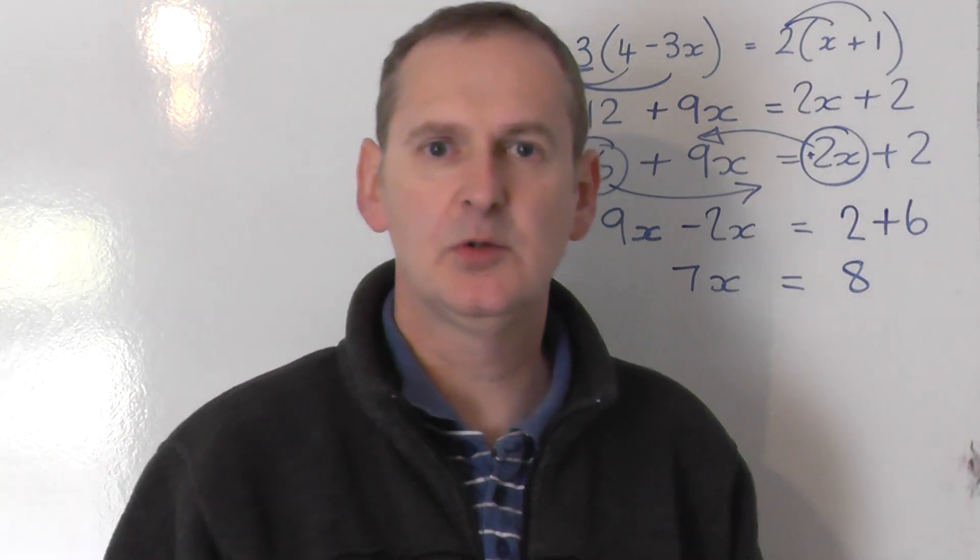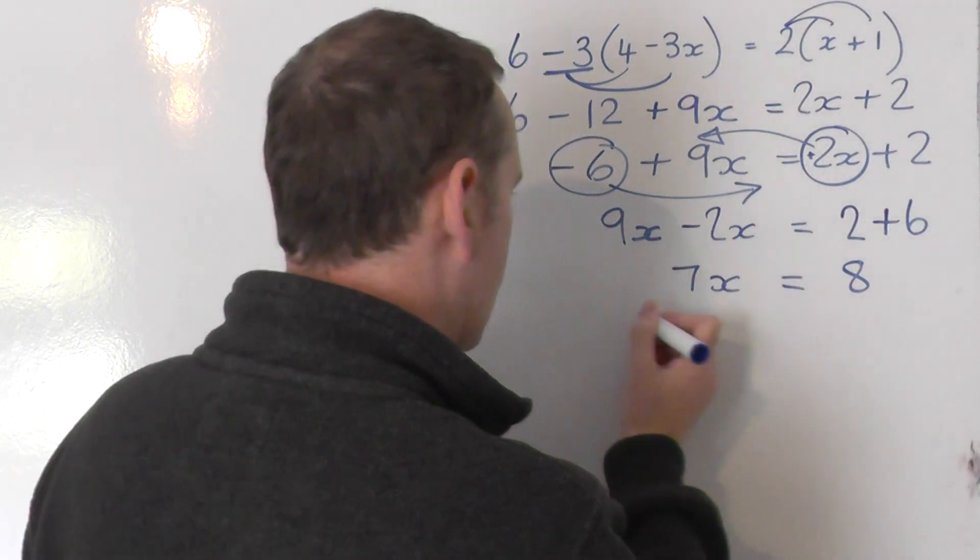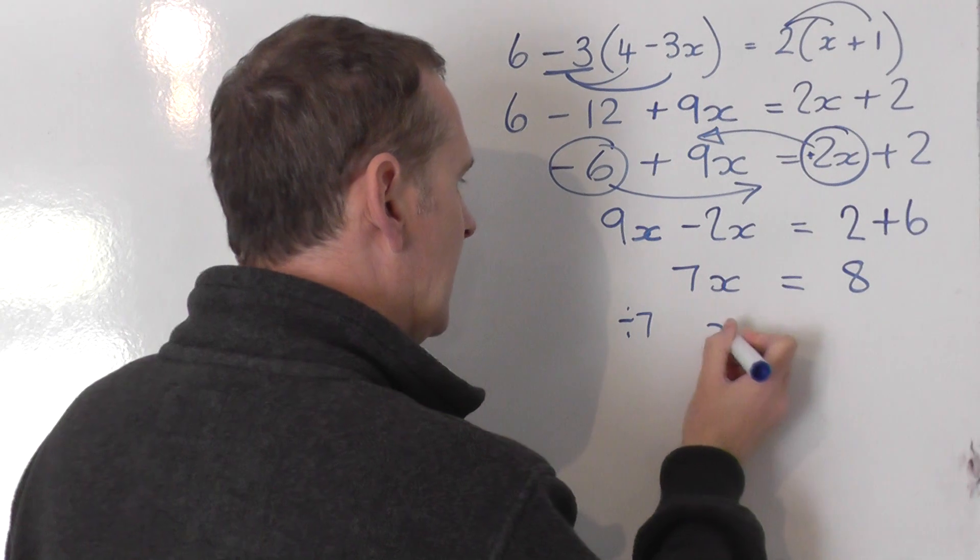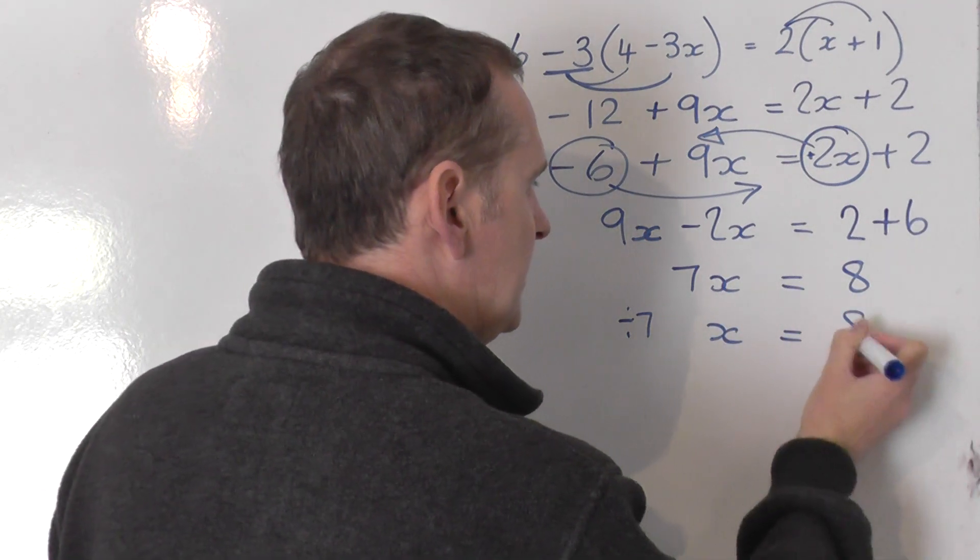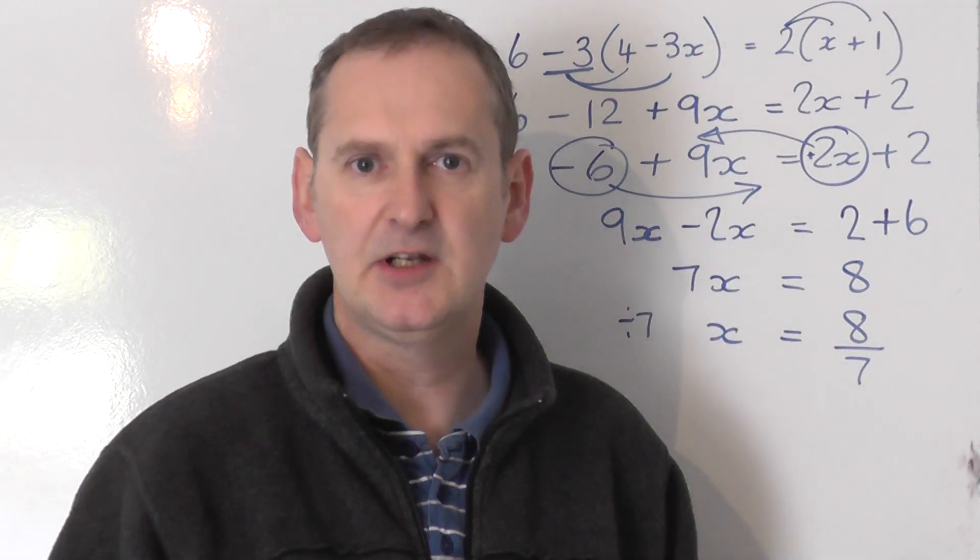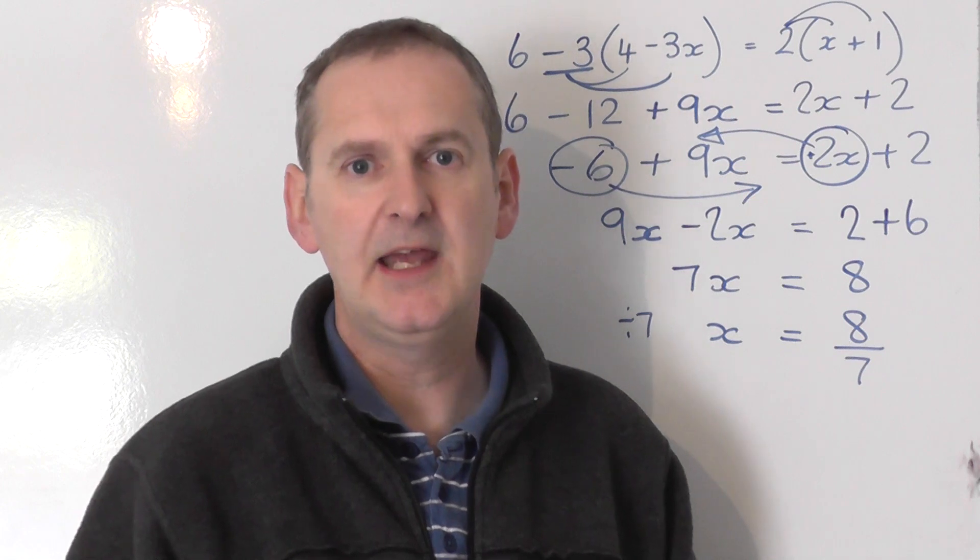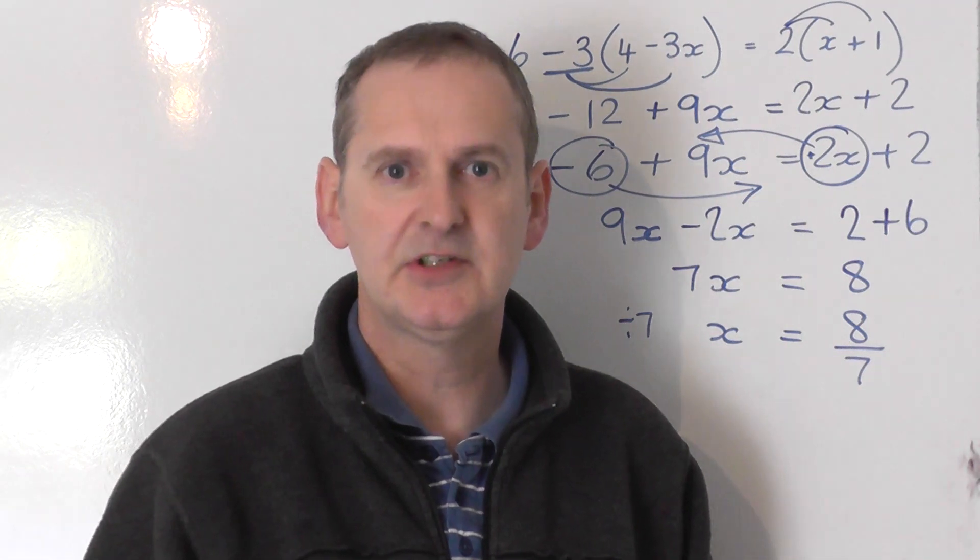So we've got 7x is equal to 8. But I don't want 7x, I want to know what x is. So what I'm going to do is share that by 7 to get x. So I take the 8 and I share that by 7 as well to keep it balanced. 8 over 7 is not a nice whole number, so I'm going to leave that in fraction format. Now x equals 8 sevenths is the answer to this equation.